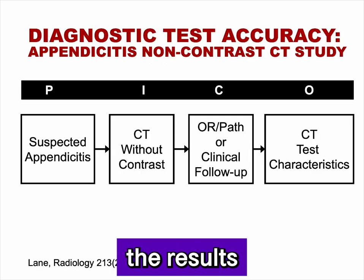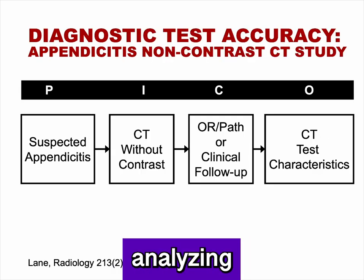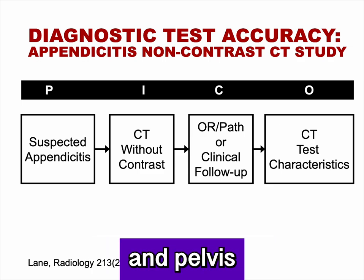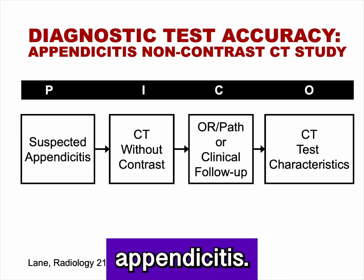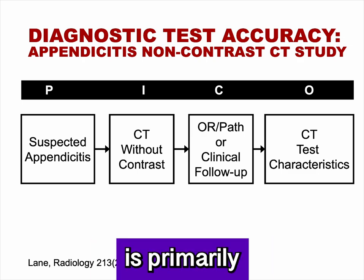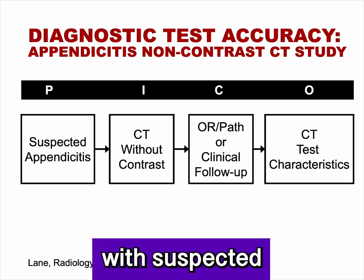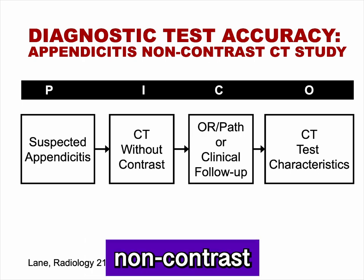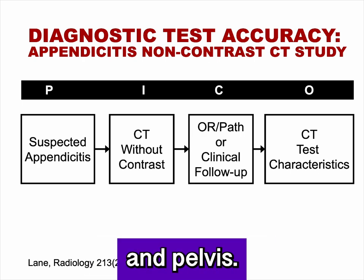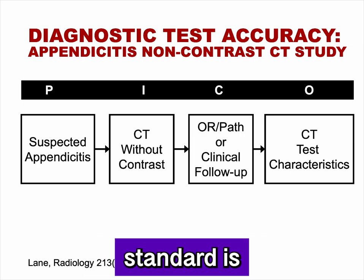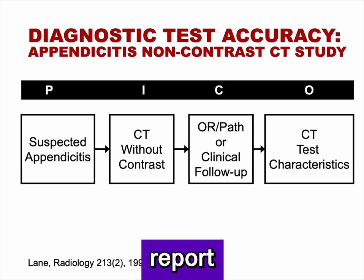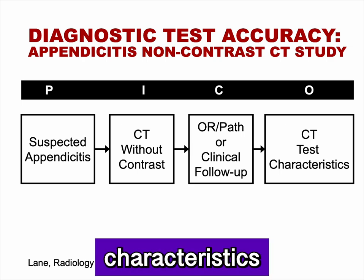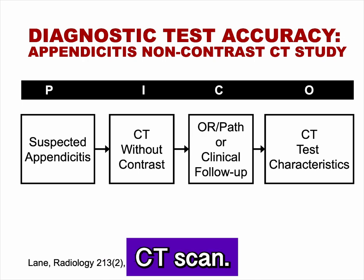We will use the results of a study conducted by Lane analyzing the accuracy of a non-contrast CT scan of the abdomen and pelvis in the identification of appendicitis. The population is primarily adult patients with suspected appendicitis. The intervention is a non-contrast CT scan of the abdomen and pelvis. The criterion standard is the operative report, pathology report, or clinical follow-up. The outcomes are the test characteristics of the non-contrast CT scan.